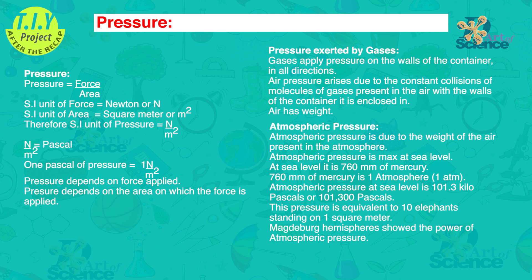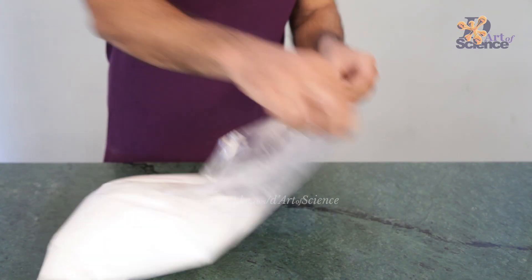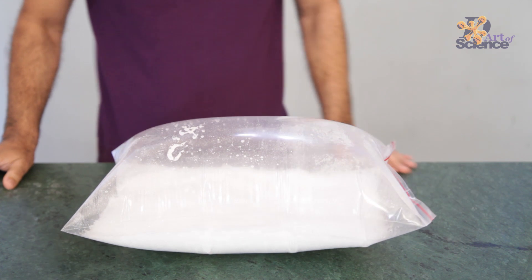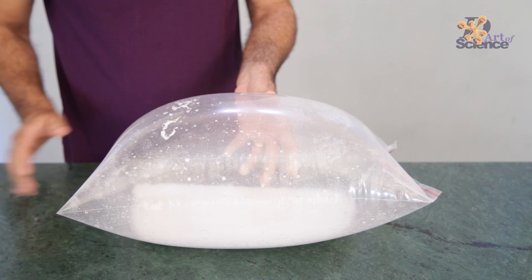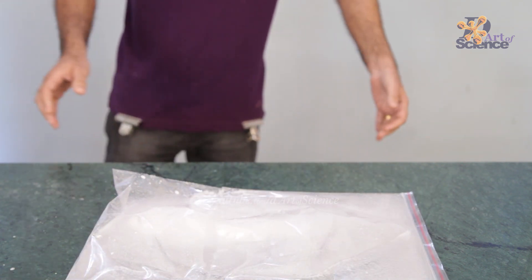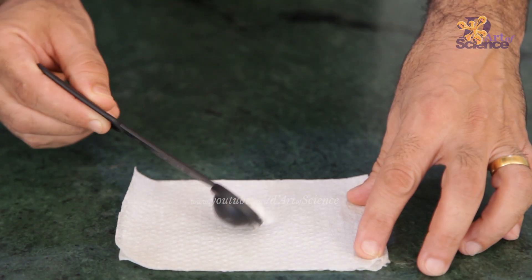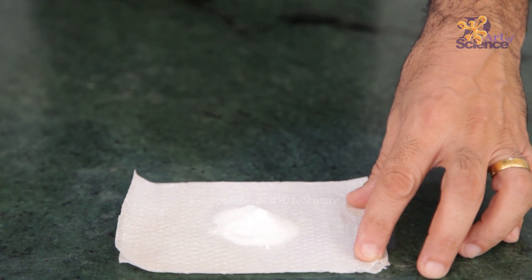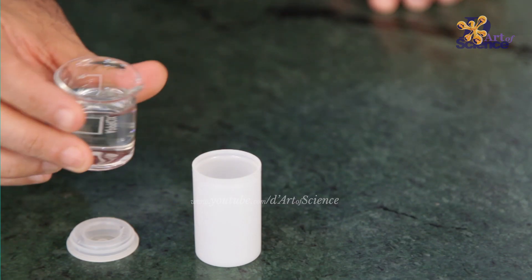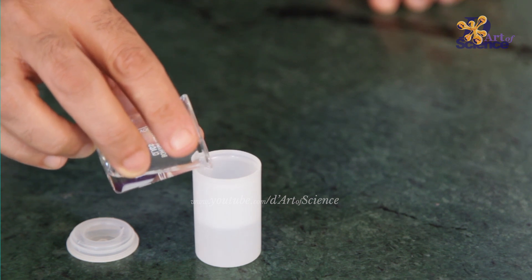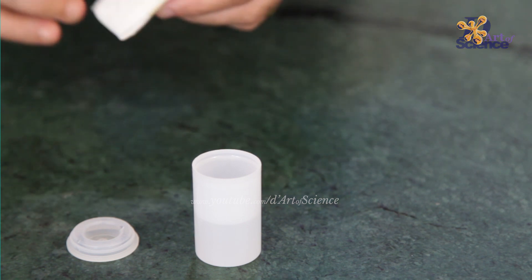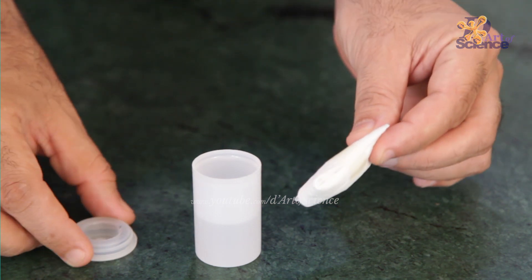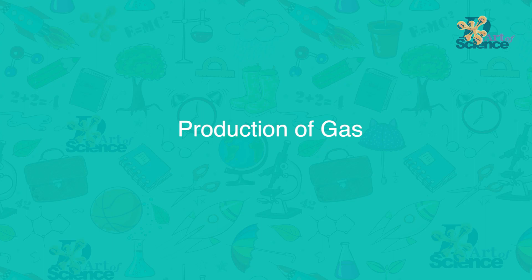Now we'll move on to the TIY project, in which we will see how gas applies pressure on all sides of a container and how the pressure can even burst it open. Vinegar and baking soda are both things available at home. Baking soda is sodium bicarbonate and vinegar is acetic acid. These two substances react in an acid-base reaction and create carbon dioxide — the gas we can create easily, and in fact we create it every time we breathe out.